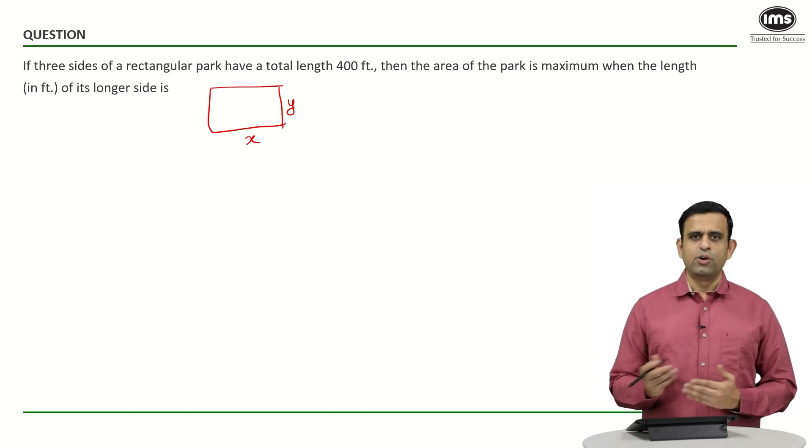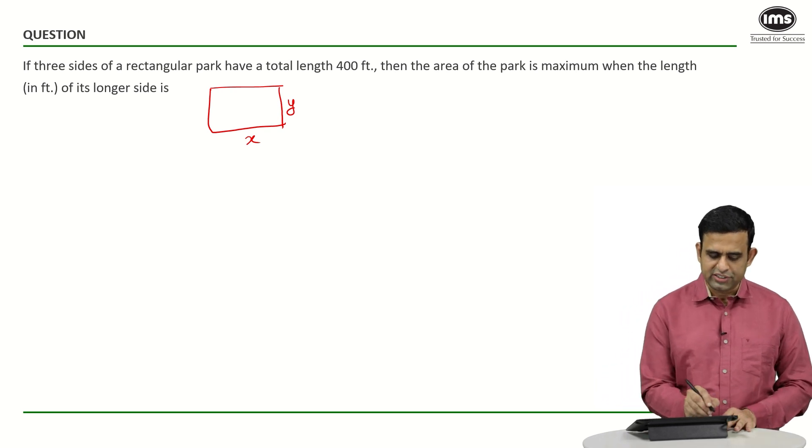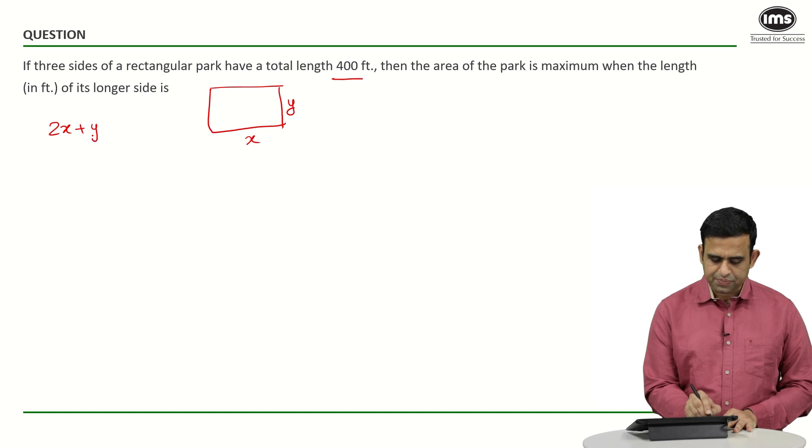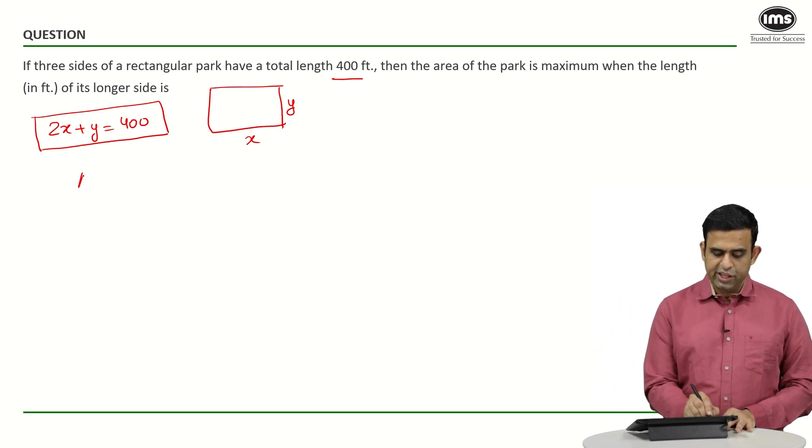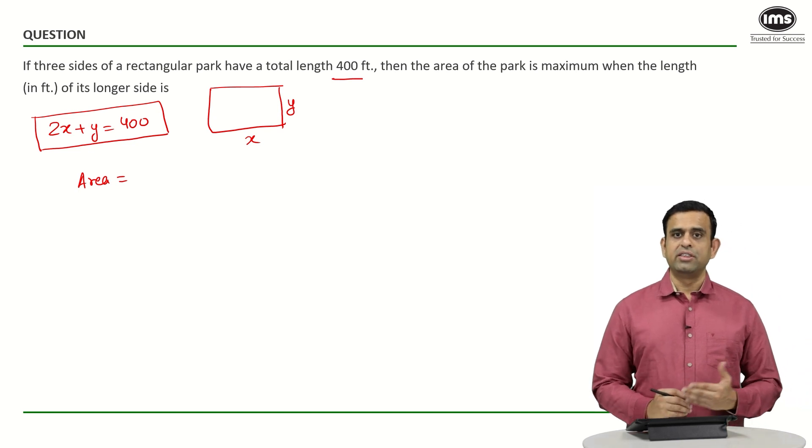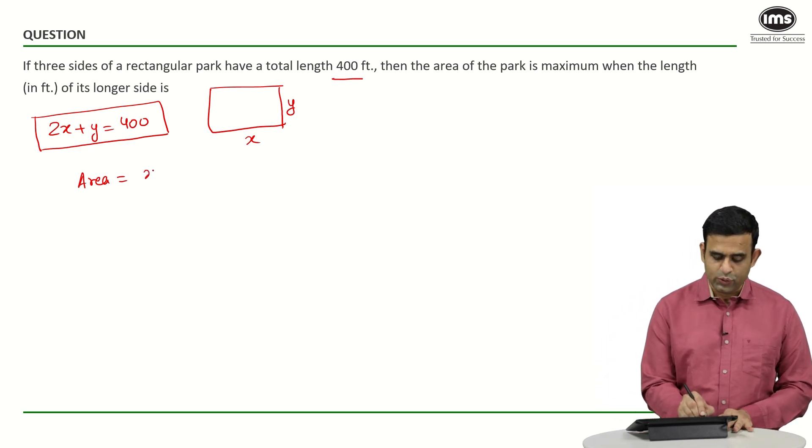It doesn't really matter since I don't know whether x is more or y is more. From the data given to us, 2x plus y equals 400. This is given. The objective is to maximize the area. What is the area of a rectangle? It's length into breadth. In this case, it has to be the product of x into y.